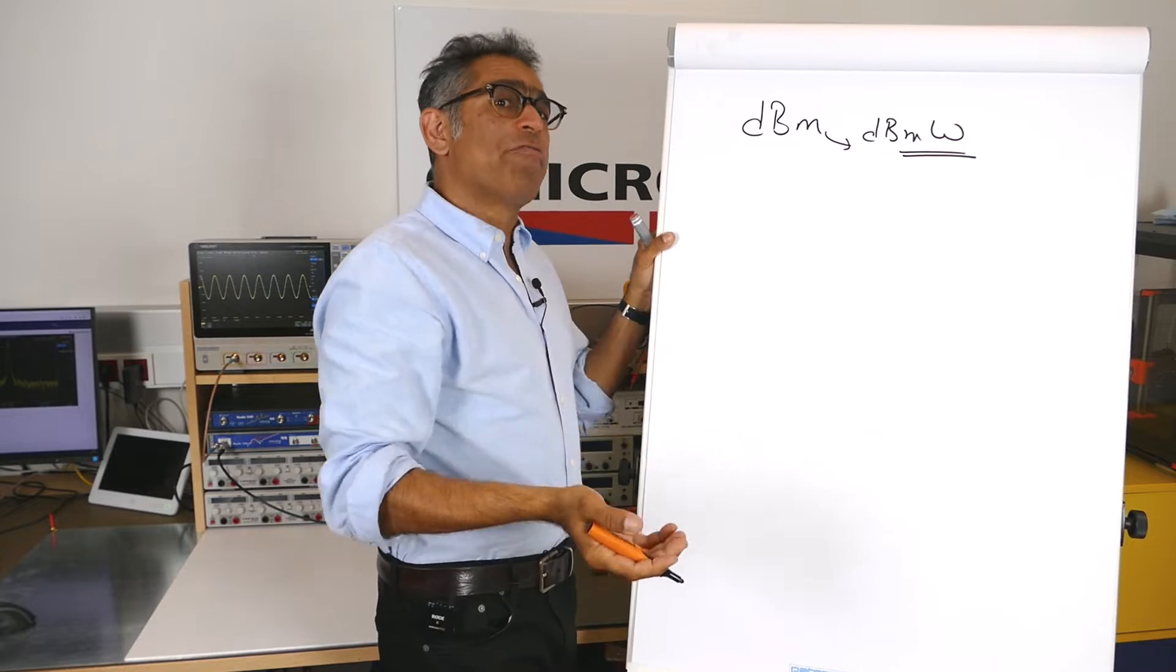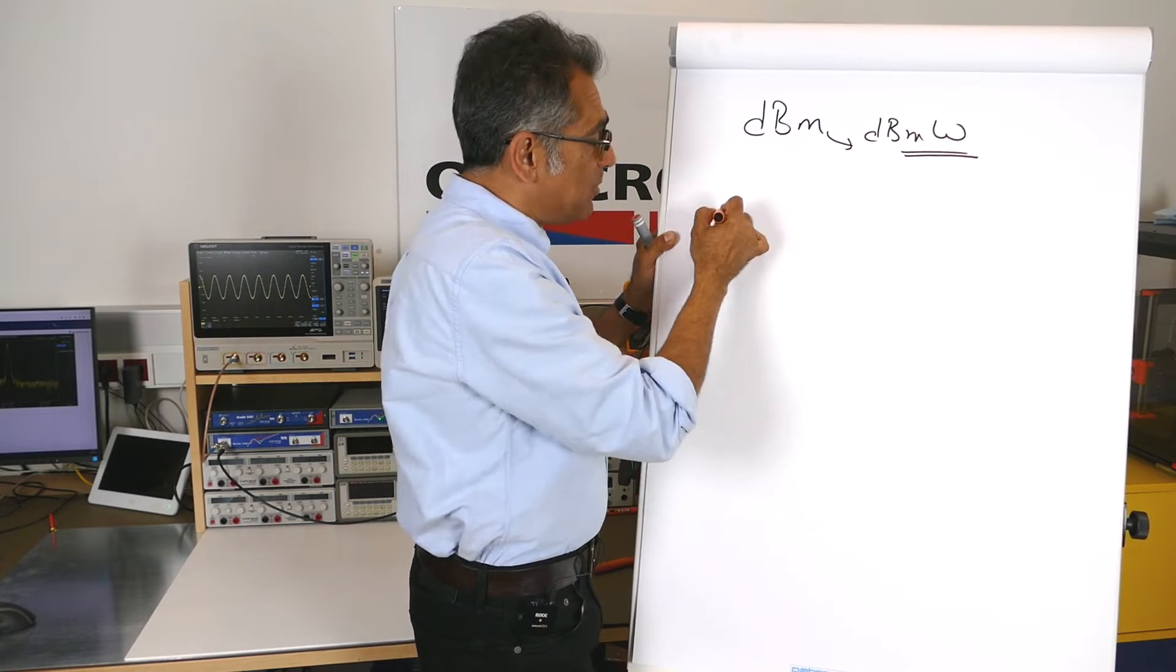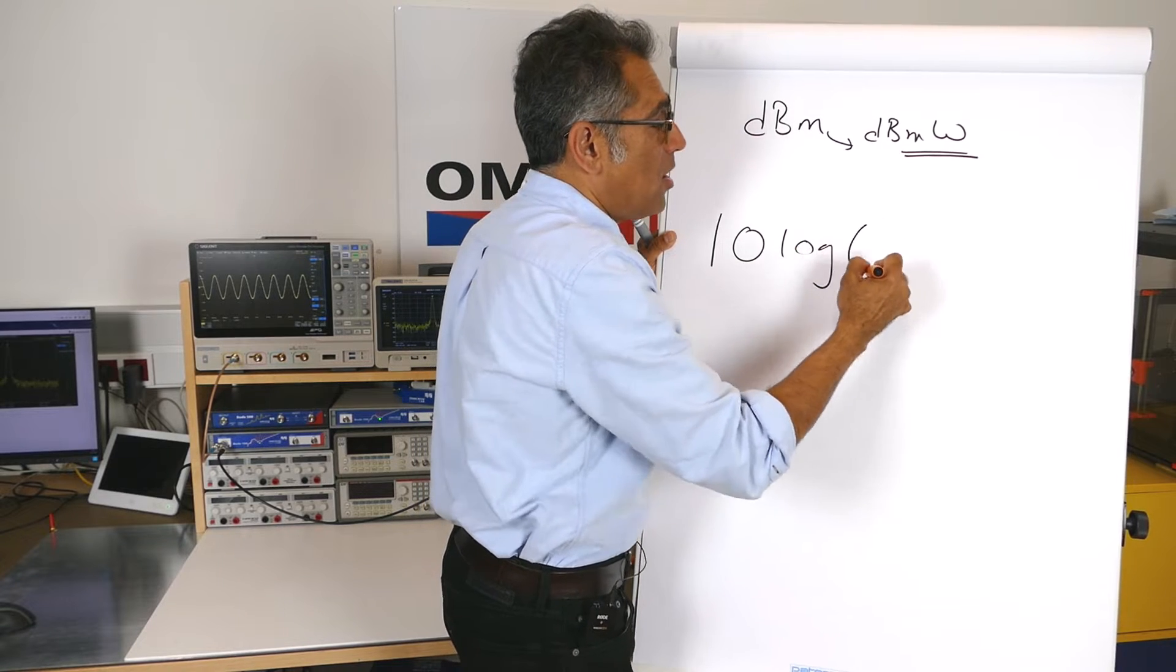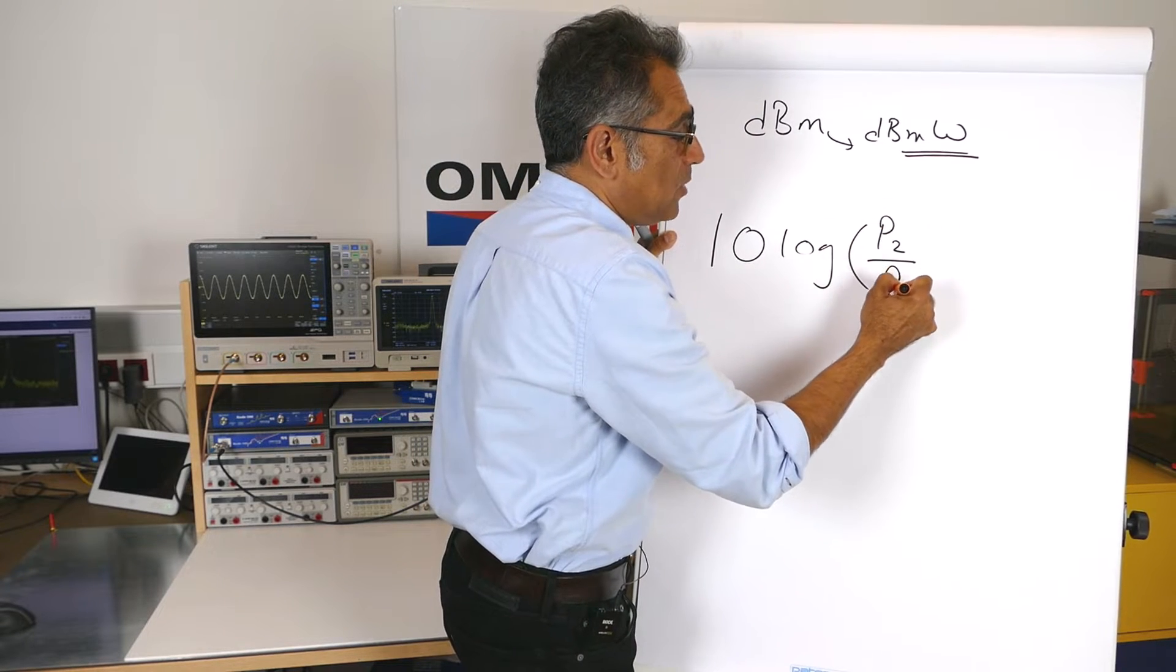Now, we know from school days that power in dB is defined as 10 log base 10 of P2 divided by P1.